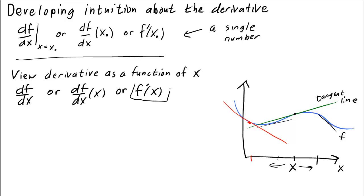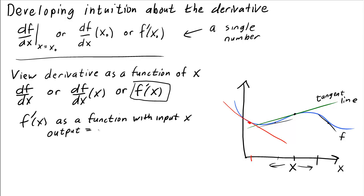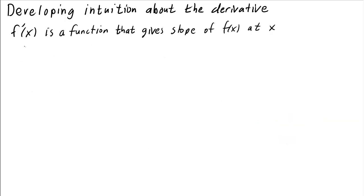For now let's use the f prime notation. We think of f prime of x as a function with input x whose output is the slope of f at x — that is, the slope of the tangent line of f at the point x. Let's see if we can get some intuition for how this function behaves by looking at some simple examples.